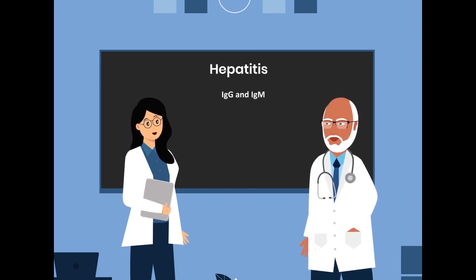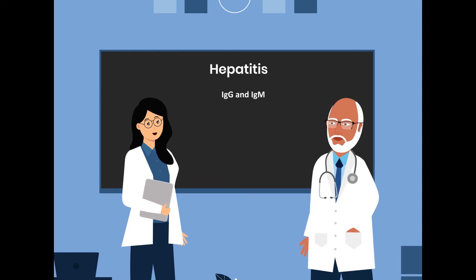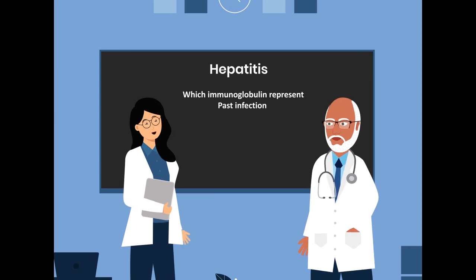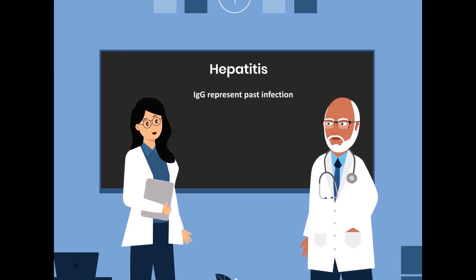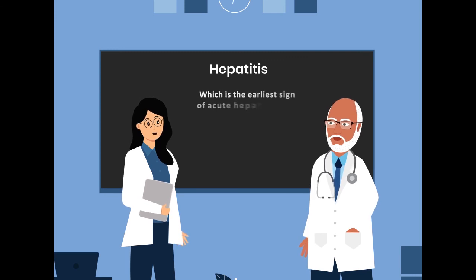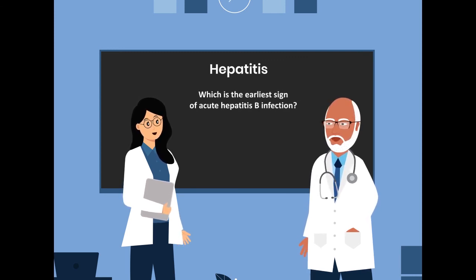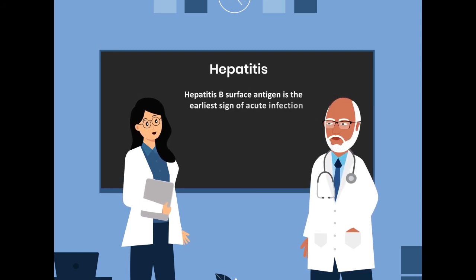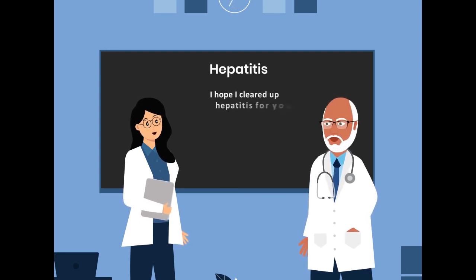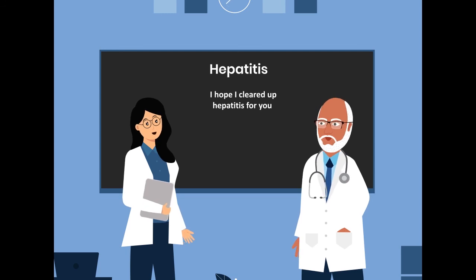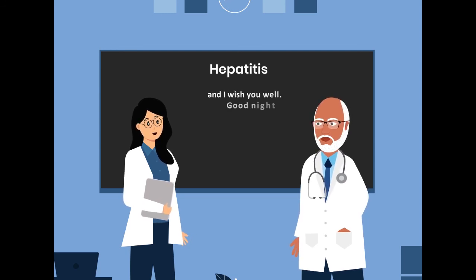Which two immunoglobulins are associated with hepatitis? IgG and IgM. Which immunoglobulin represents past infection? IgG represents past infection. And finally, which is the earliest sign of acute Hepatitis B infection? Hepatitis B surface antigen is the earliest sign of acute infection. I hope I cleared up hepatitis for you and I wish you well.